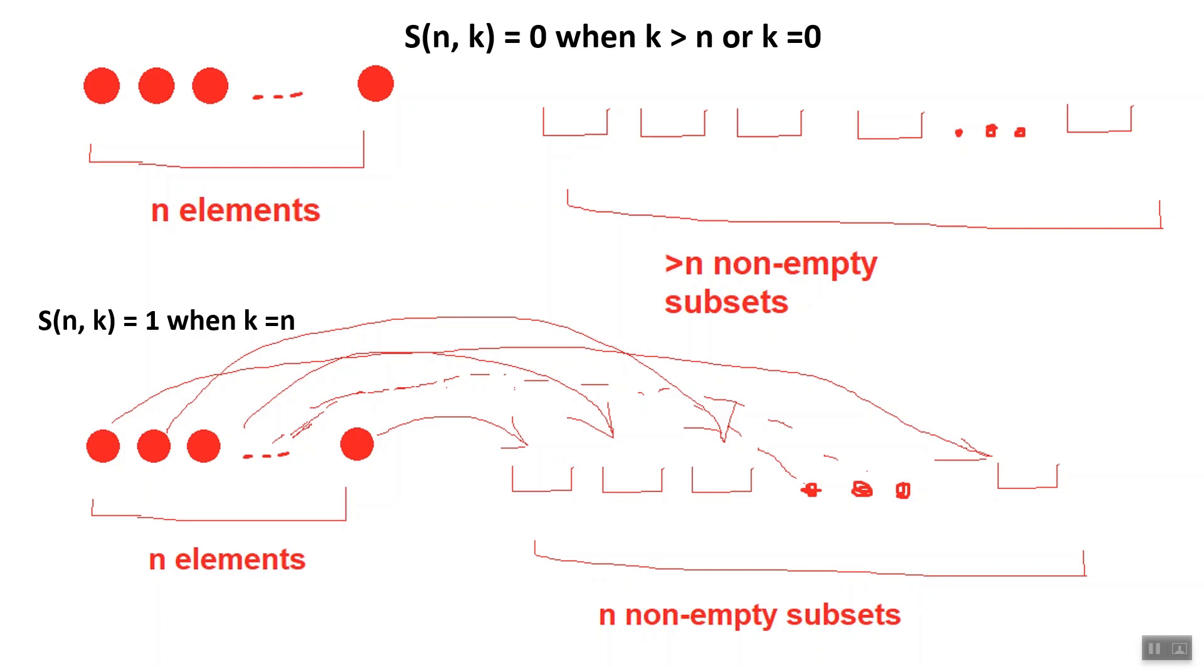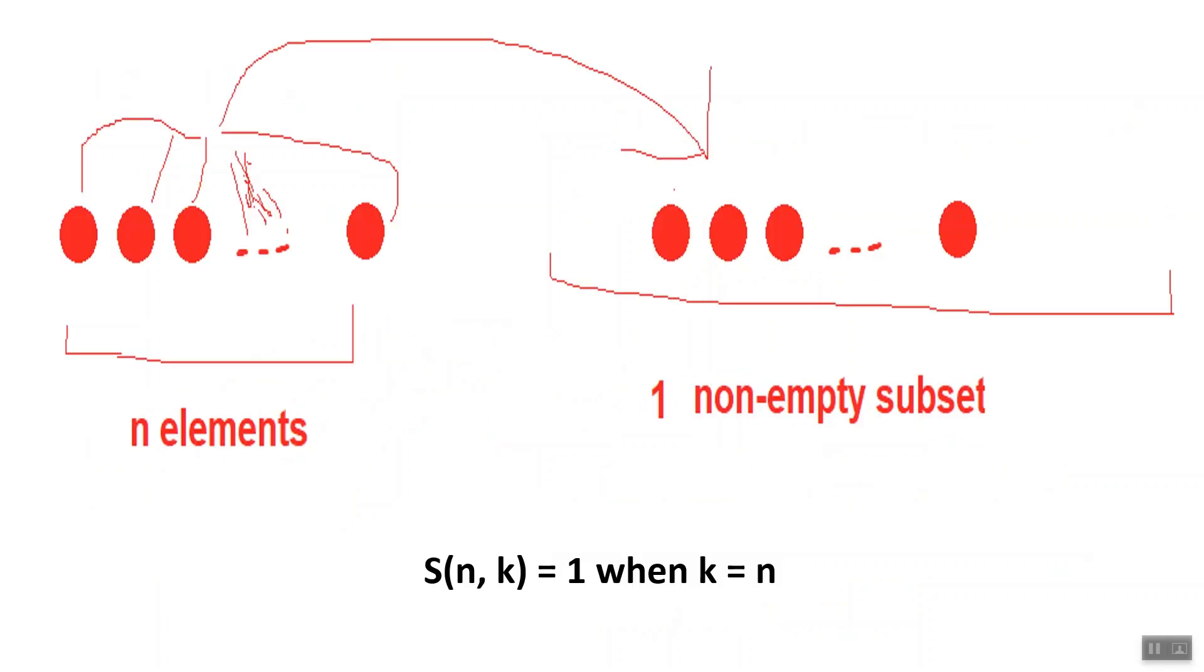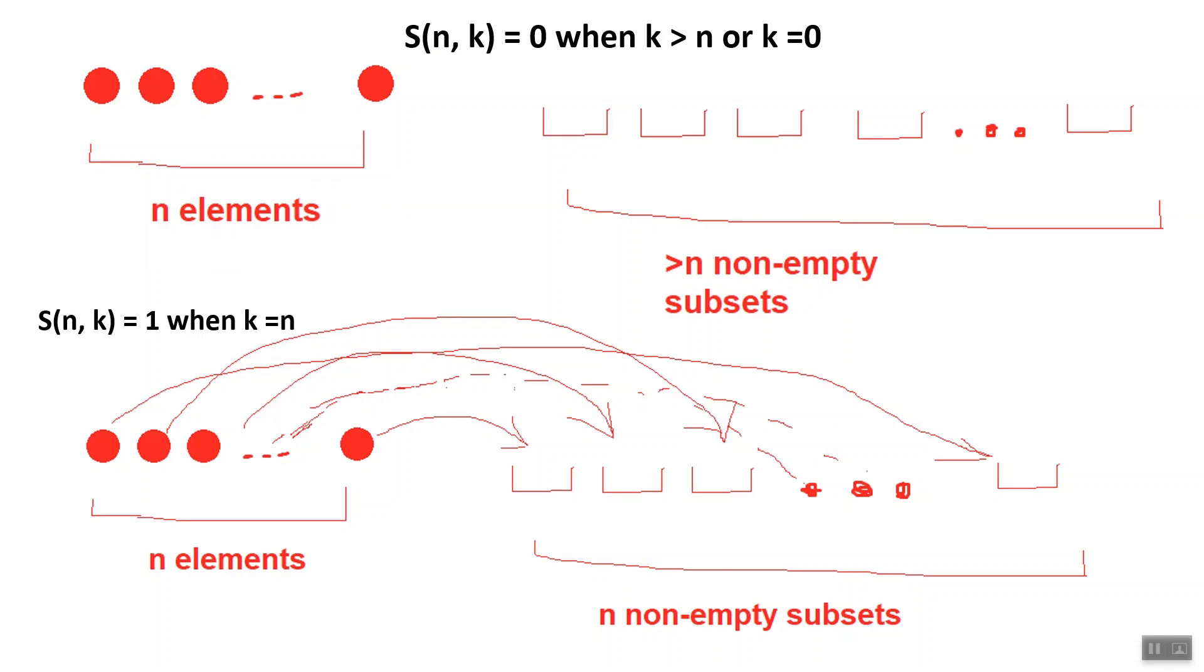Another identity would be S(n,k) equals 1 when k equals n or k equals 1, as there's only one way to partition a set into one non-empty subset, that is, placing all of your elements into that subset, and only one way to partition a set into n non-empty subsets, which is to place each element of your set into its own subset.